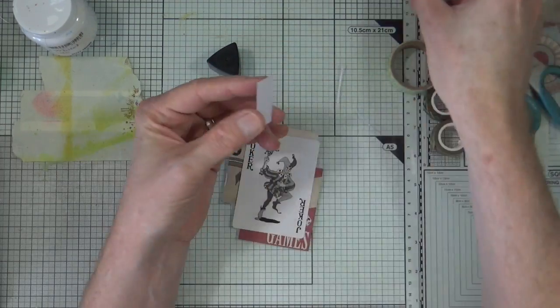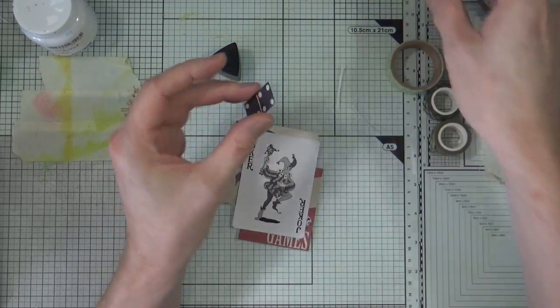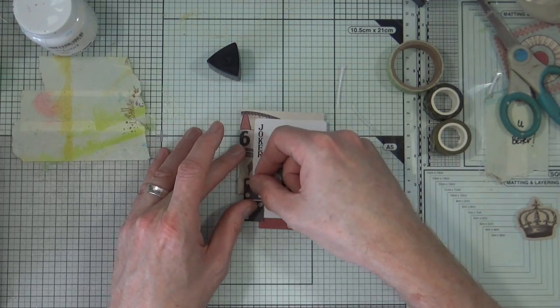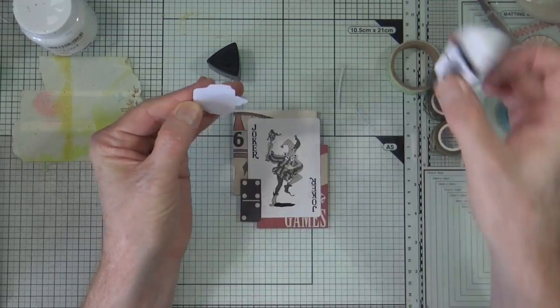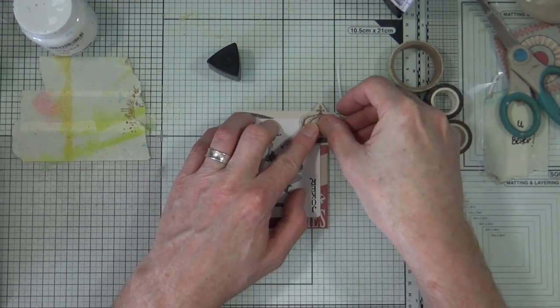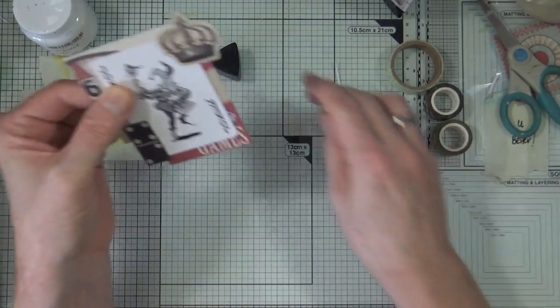I'm going to add that to the bottom left of my cluster and then I have a little crown which you can just see in the bottom right hand side of the picture, and I'm going to add that to the top right of my little cluster and then I'm going to grab the foam pads to stick that down.